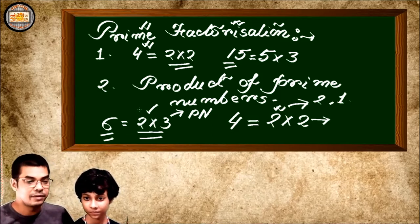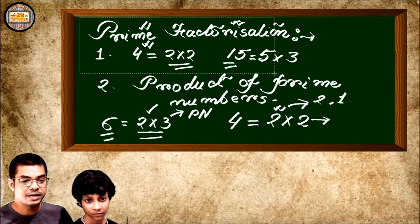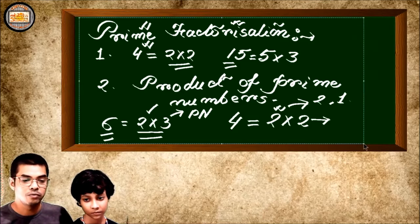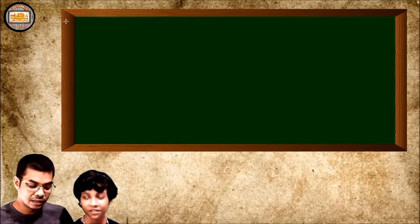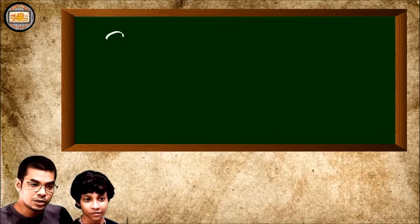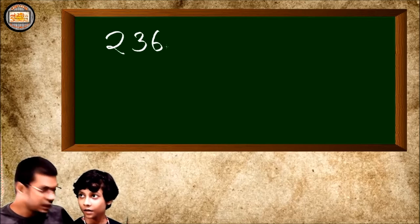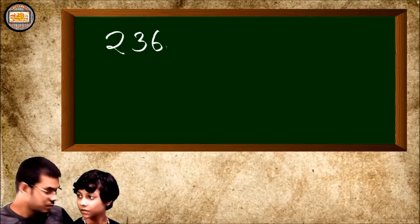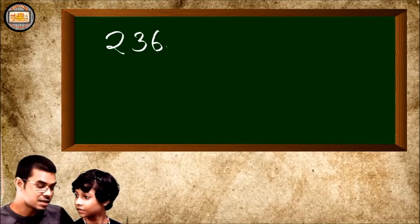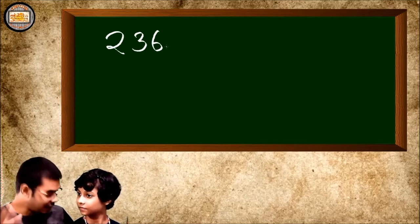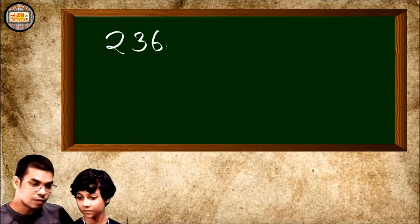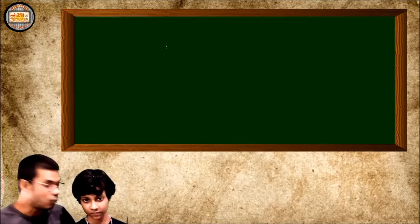For small numbers like 6 or 4 we can find the factors very easily, but what happens with larger numbers? Suppose we have 236 and I ask you to factorize it into prime numbers — the simple method won't work. We need an easier method because numbers can have many digits — 10, 20, or even 100 digits.